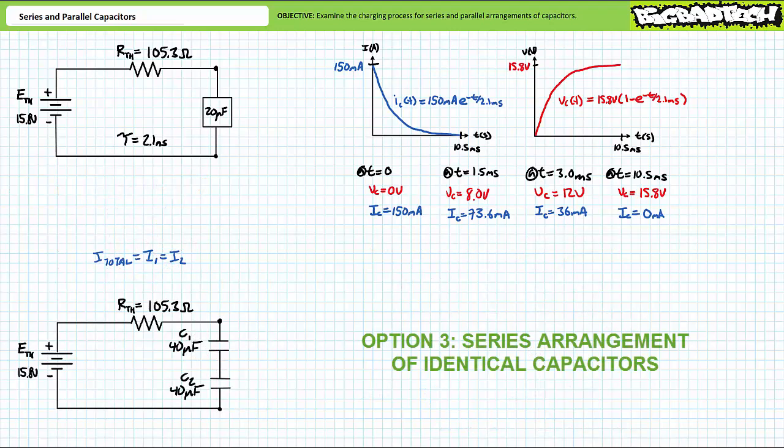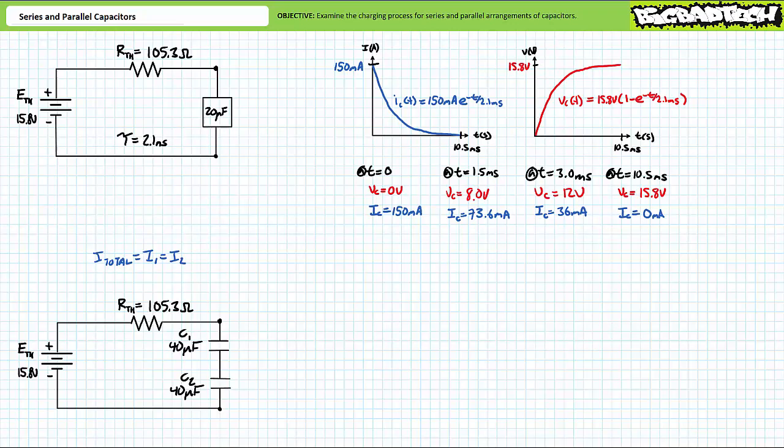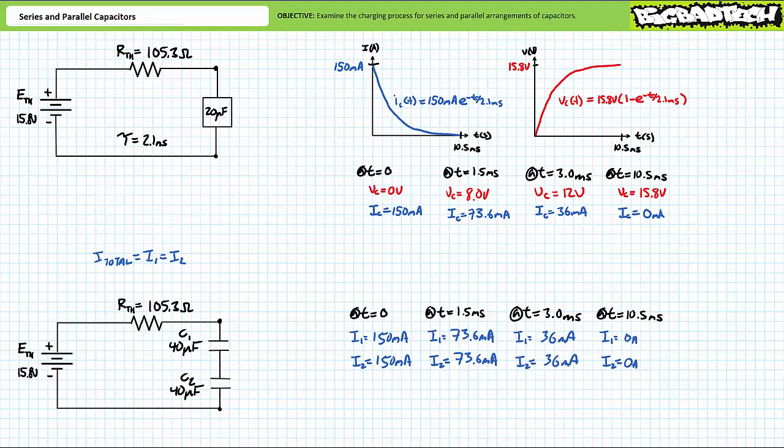Option three, also super easy: the elements inside the box are a series arrangement of identical capacitors yielding 20 microfarads total. Consider two 40 microfarad capacitors in series. Current through elements in series is the same, so I1 equals I2 at any point. At t equals zero, both experience a 150 milliamp surge. At 1.5 ms, both experience 73.6 mA. At 3 ms, both experience 36 mA. At 10.5 ms, both are fully charged and current ceases.